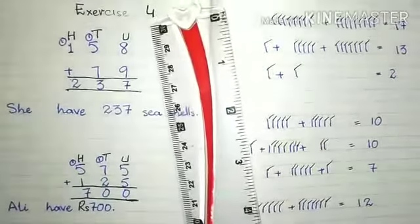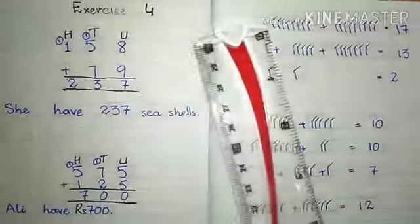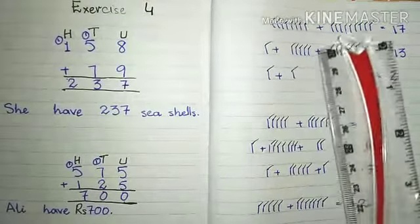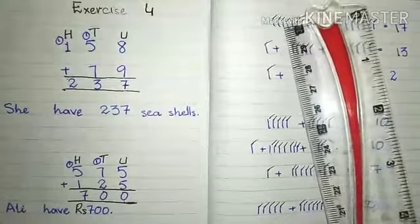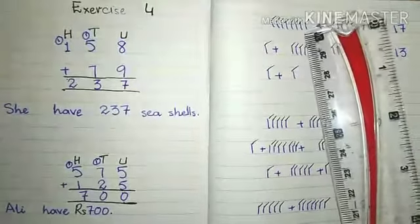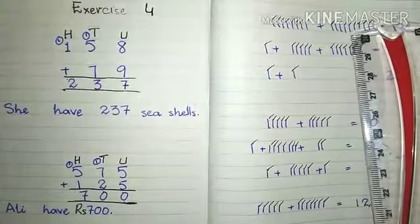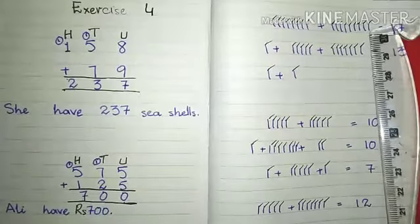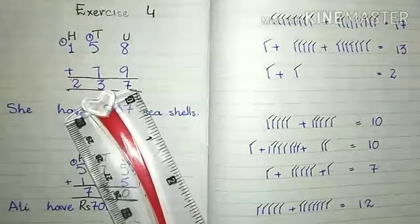Now we will add this. We will start addition always from unit side. In 8 we will add 9. Firstly we will draw 8 lines, then we will draw 9 lines, then we will count these total lines. Let's count: 1, 2, 3, 4, 5, 6, 7, 8, 9, 10, 11, 12, 13, 14, 15, 16 and 17.